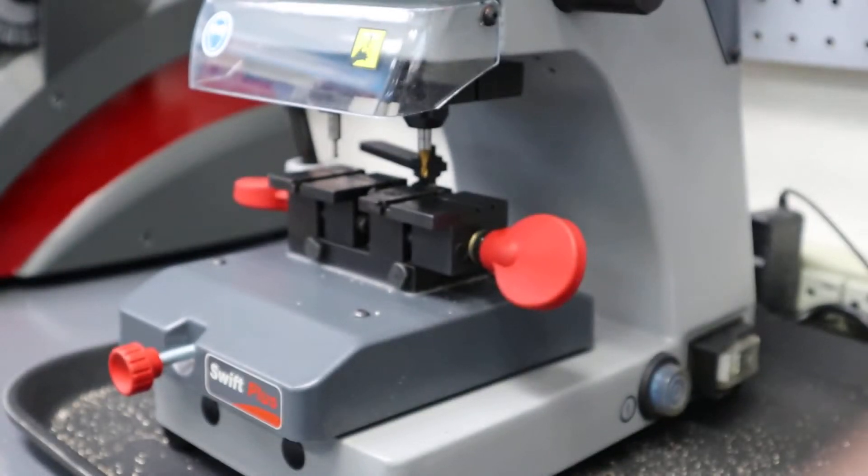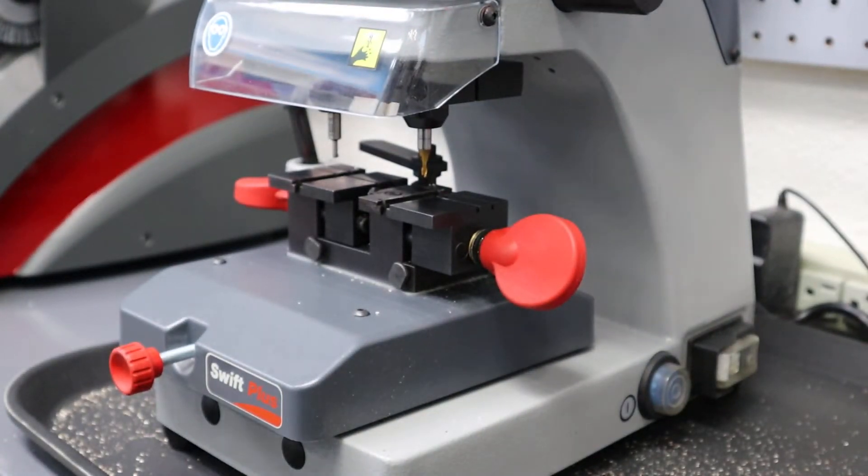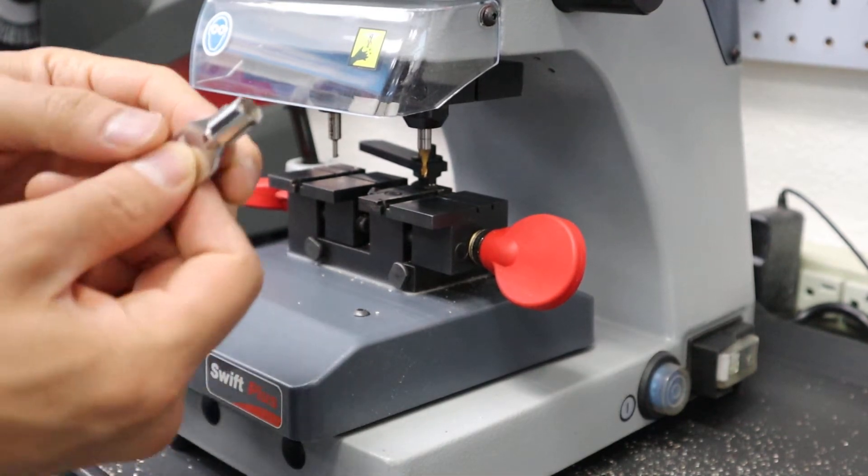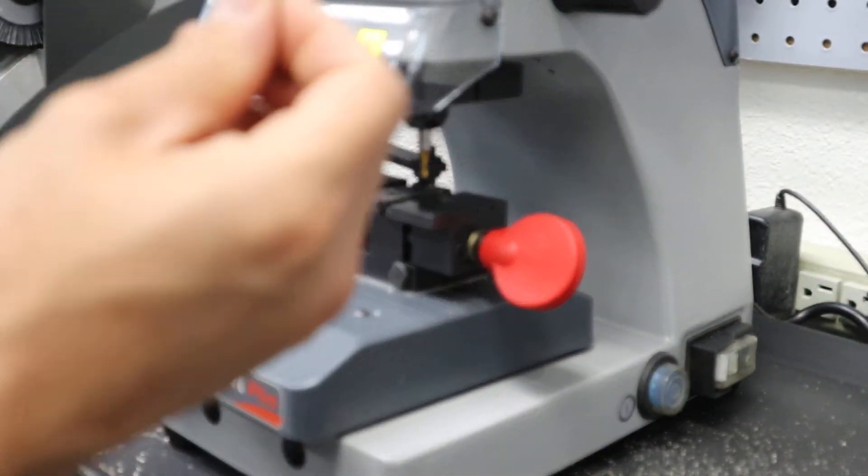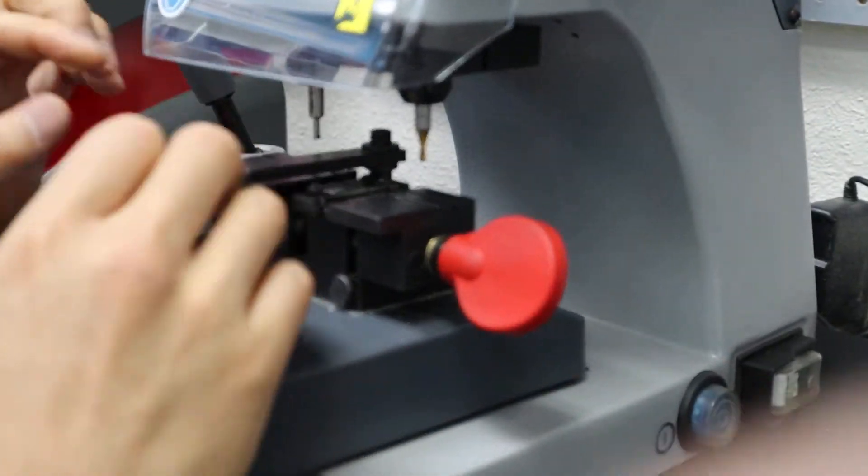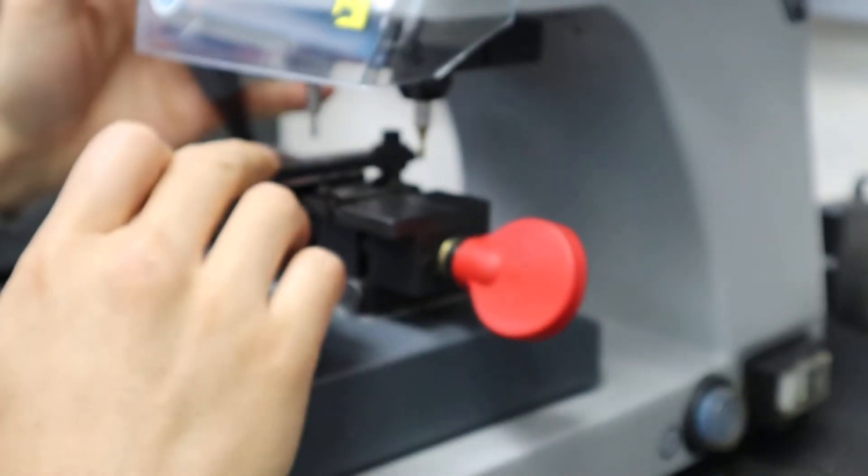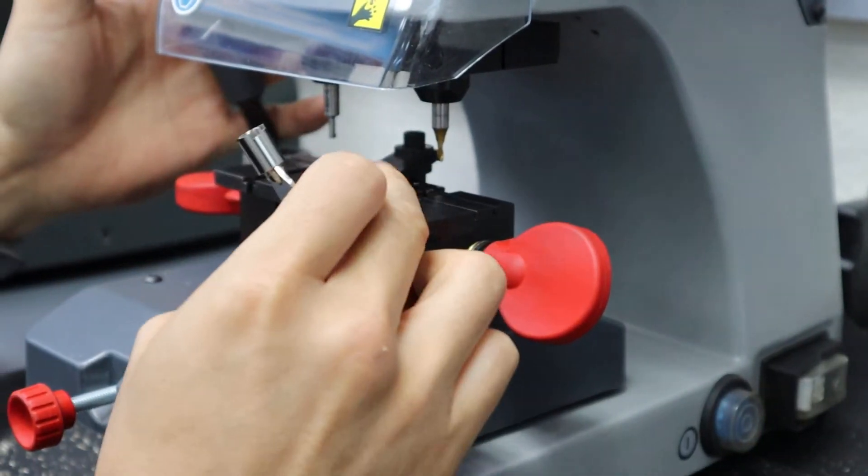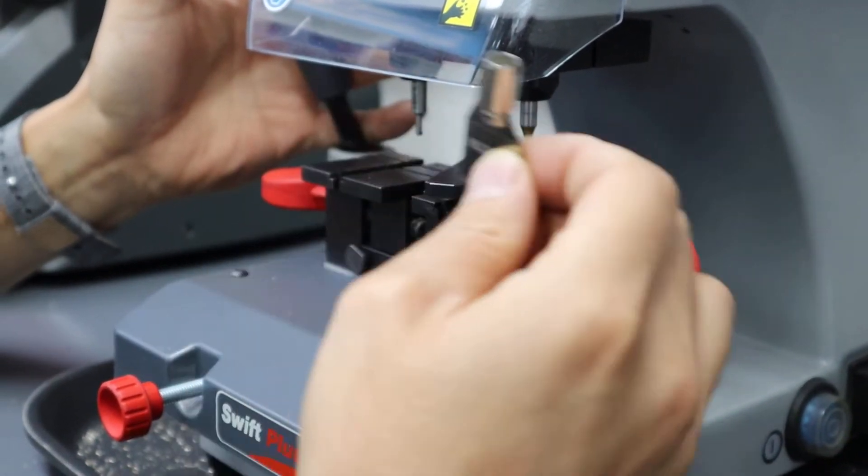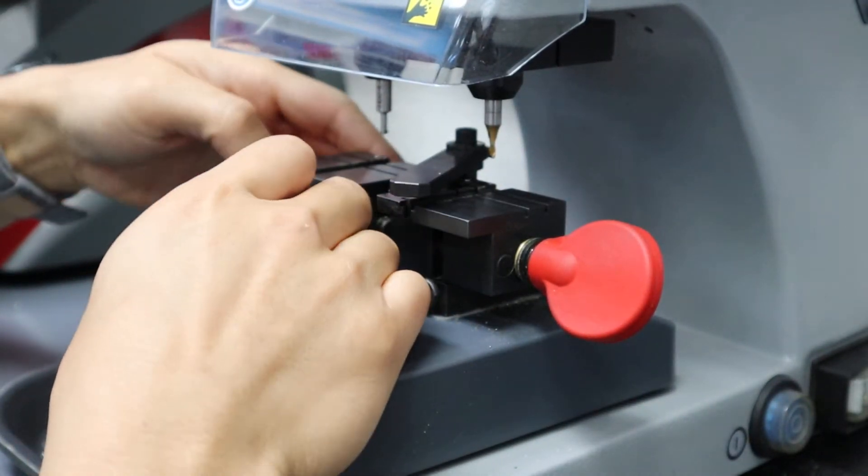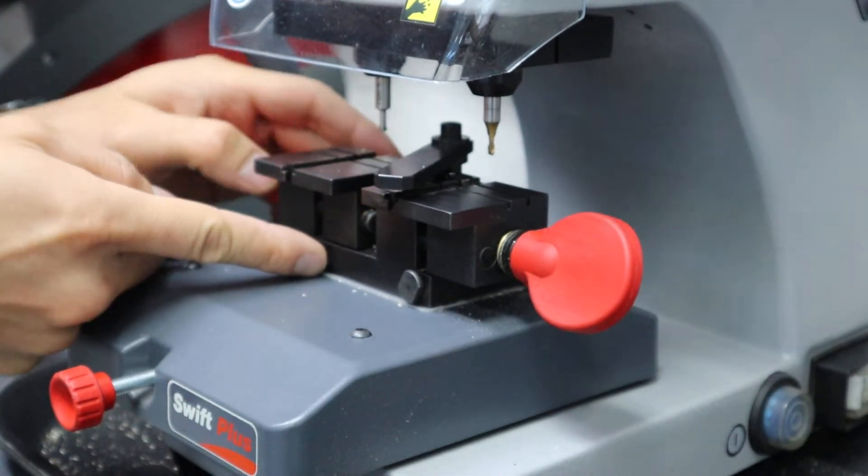Let's go ahead and get this on the machine itself. Same thing—tracer's on the left side, key that we're going to be duplicating is right here. I don't think I showed this in the tutorial on the laser cutting machine, but this is a tip stop for these types of keys. And then there's also actually one more thing down here which helps level out the key.